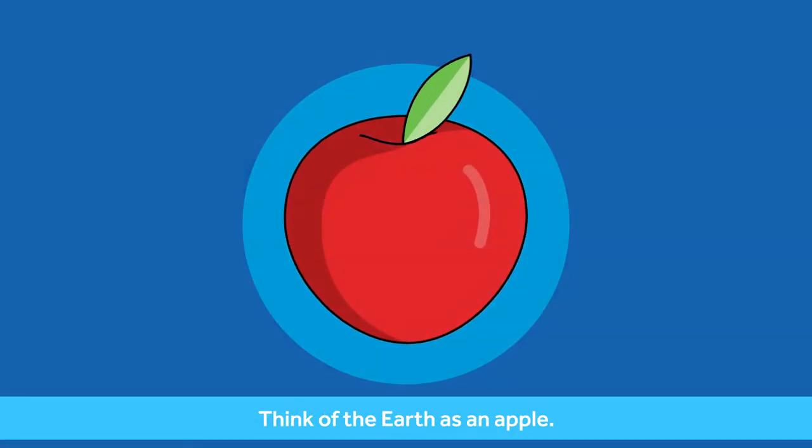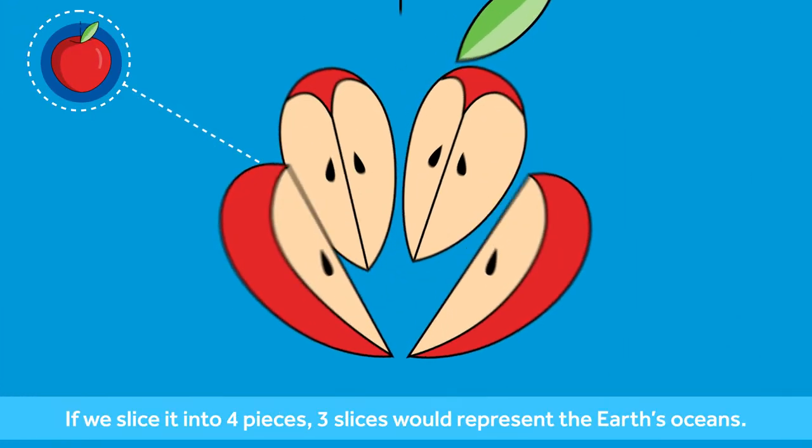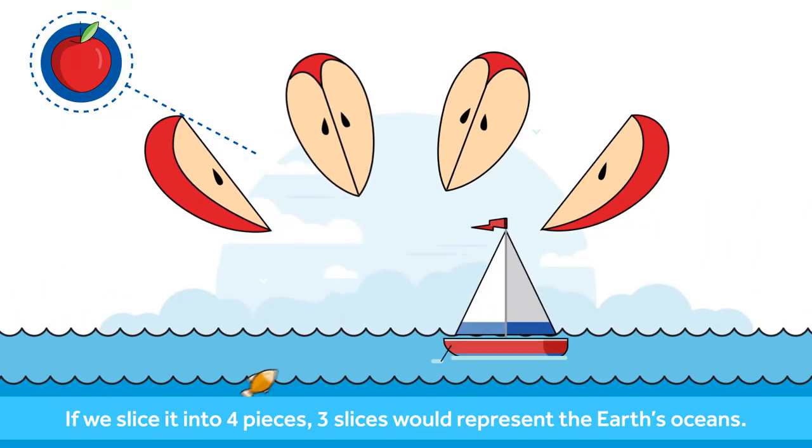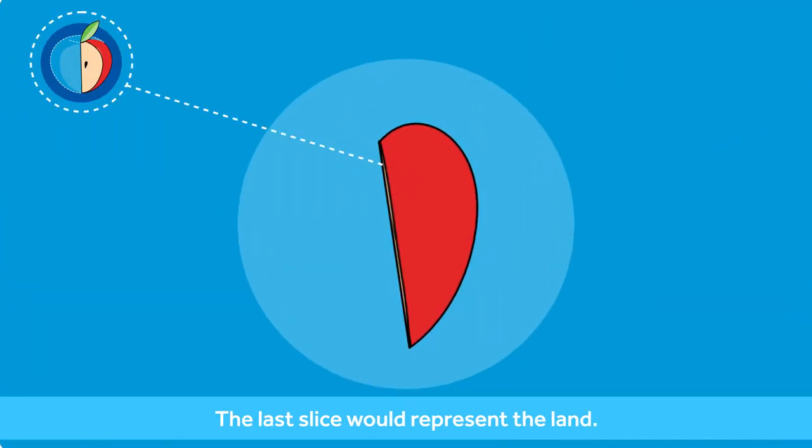Think of the earth as an apple. If we slice it into four pieces, three slices would represent the earth's oceans and the last slice would represent the land.